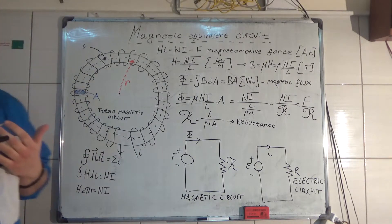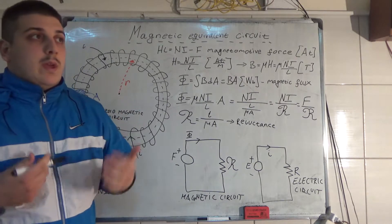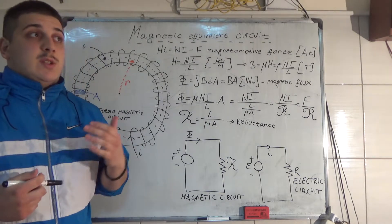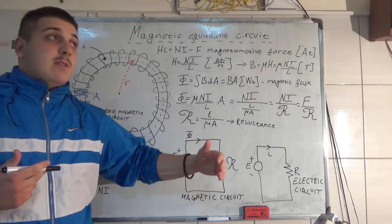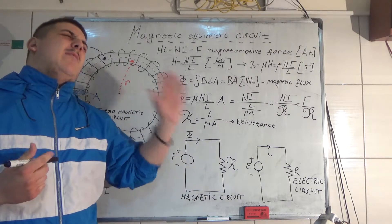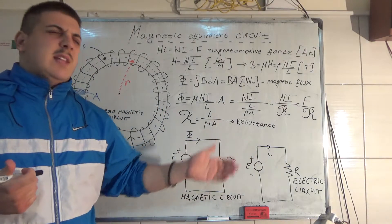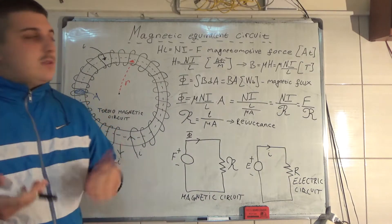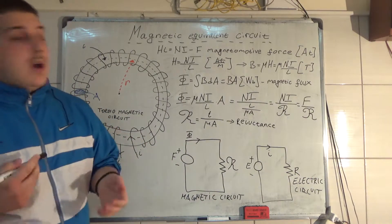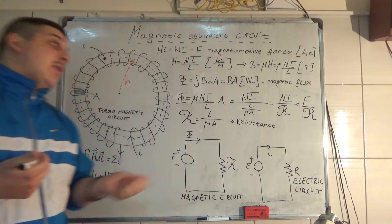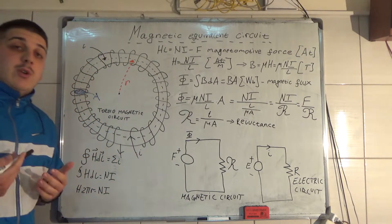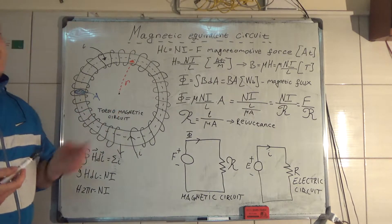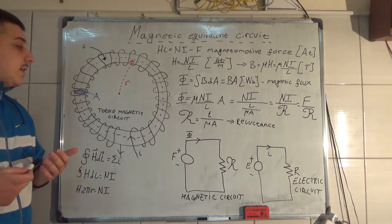In my previous video I told you about the relations when we have current, magnetic field intensity, and magnetic flux density. Now I'm going to show you one equivalent circuit called a toroid — one magnetic circuit.